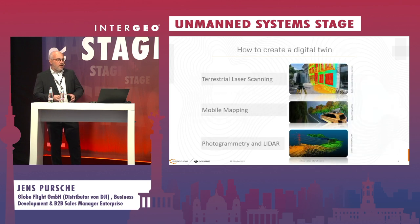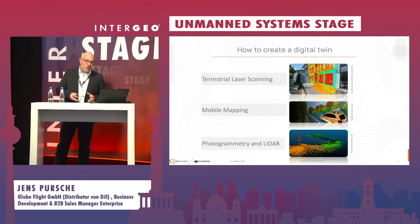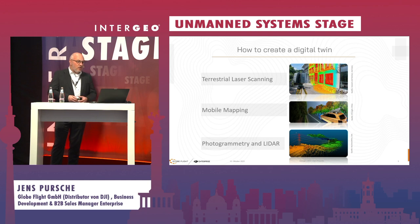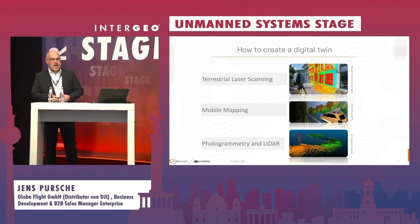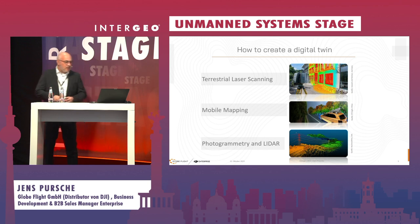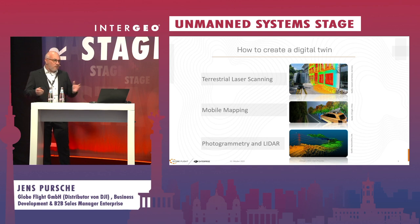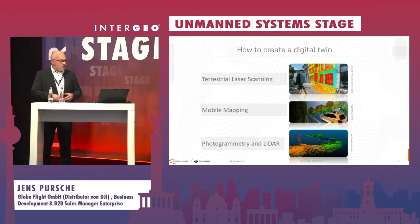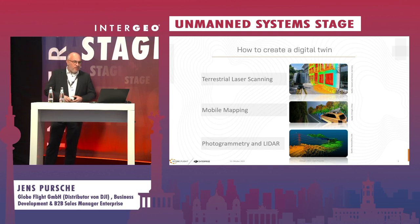There are three different possibilities to create a digital twin. One is terrestrial laser scanning, and another is mobile mapping, both of which generate a very high volume of information in a short time. However, both solutions are very limited in height above the ground — effective up to maybe 20 meters. Beyond that, all the information in the urban space above 20 meters requires a different approach.